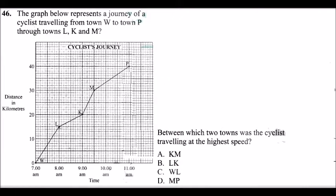Question number 46. The graph below represents a journey of a cyclist traveling from town W to town P through towns K, L, and M. So we have the graph. The question is between which two towns was the cyclist traveling at the highest speed? So what you need to do here is to study this graph.